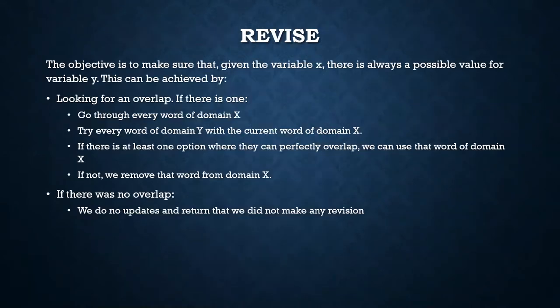The revised function wants to make sure that given variable x, there is always a possible value for variable y. To achieve this, we look for an overlap and compare each word of domain x with each word of domain y. If there is at least one option, we can use that word and we're good to go. If not, we remove the first word from domain x.